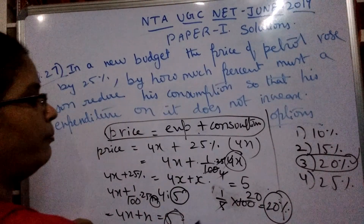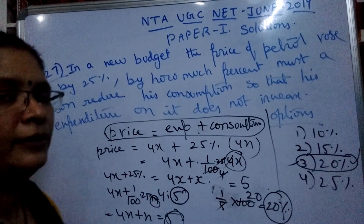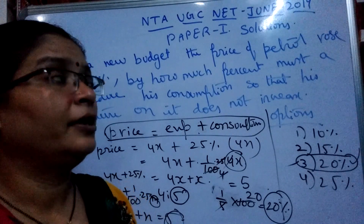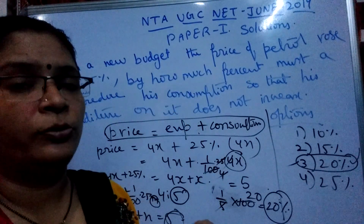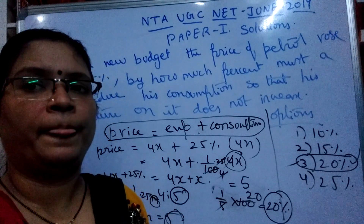In this session for NTA UGC NET, we have solved question number 23, question number 24, and question number 27. For such price-consumption questions, use the formula: Price = Expenditure + Consumption. Let expenditure equal 4x, add 25% which gives 5x, then convert to percentage to get 20%.